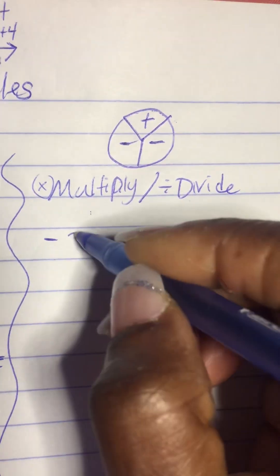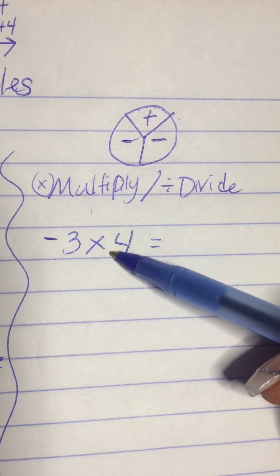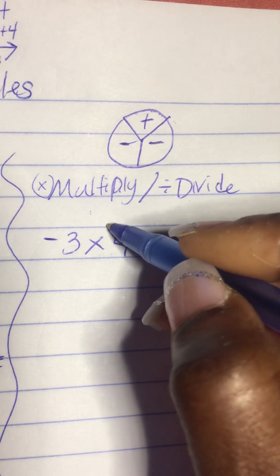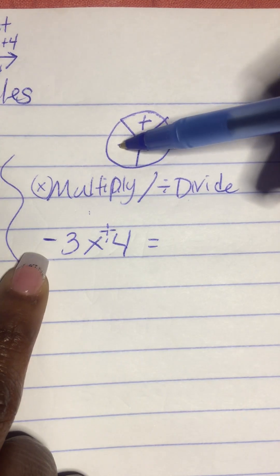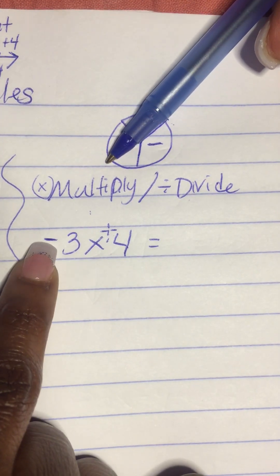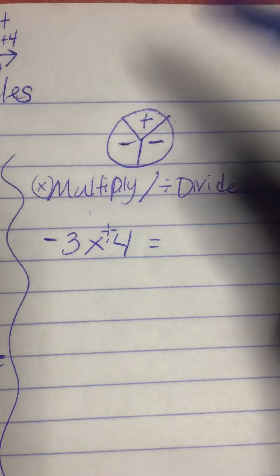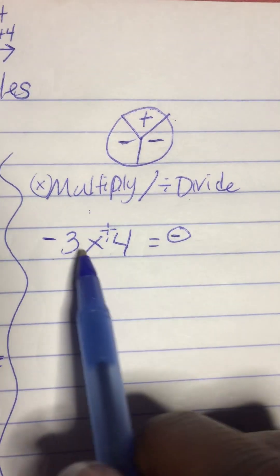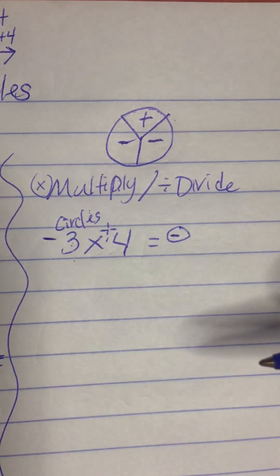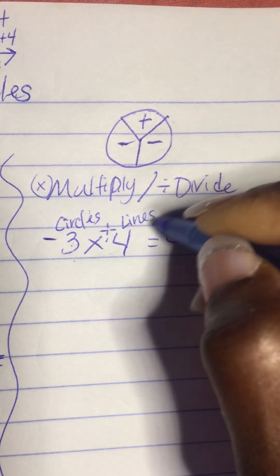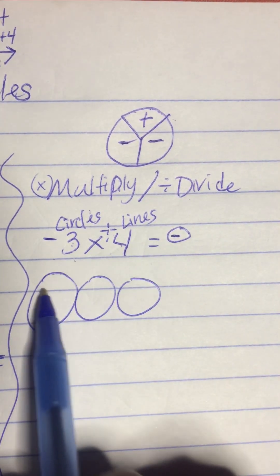So let's take the same numbers: negative 3 times a positive 4. This 4 with nothing in front of it means there's an imaginary plus symbol in front of it. You're going to cover up the minus sign to represent the 3, and cover up the plus sign to represent the 4. That means you're left with a negative answer. The first number in multiplication means circles — you draw that many circles. The second number, you draw those lines inside. So I'm going to draw three circles and four lines inside each circle.